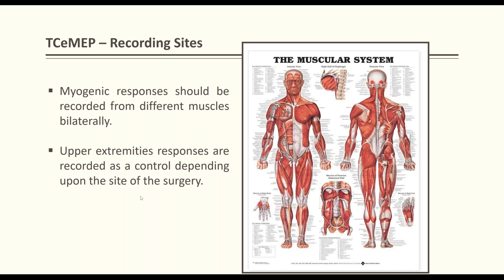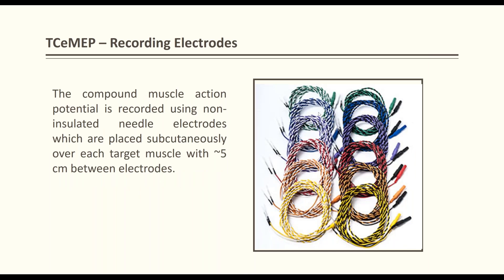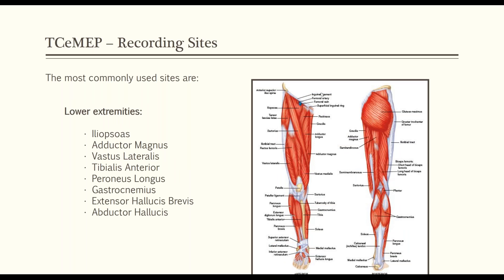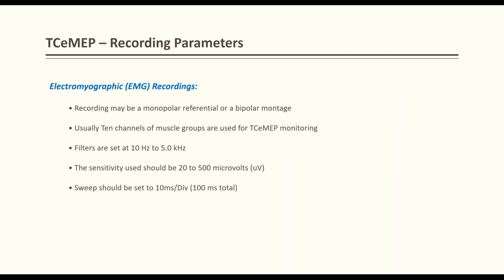For upper extremity recording, subdermal needle options include 18mm, 25mm, 37mm, and 50mm — longer needles for obese patients. Typical upper extremity muscles recorded include: deltoid, biceps brachii, brachioradialis, flexor carpi radialis and ulnaris, abductor pollicis brevis, and first dorsal interosseous. For lower extremity, the iliopsoas is the most difficult due to depth. Other options: adductor magnus, vastus lateralis and medialis, tibialis anterior, peroneus longus, gastrocnemius, extensor hallucis longus, and abductor hallucis.